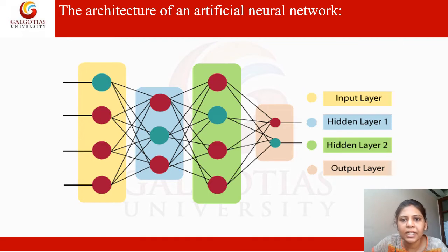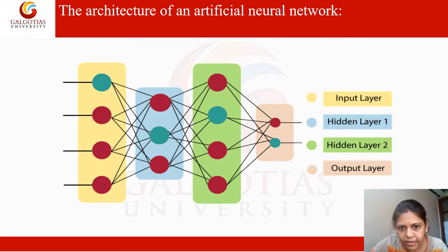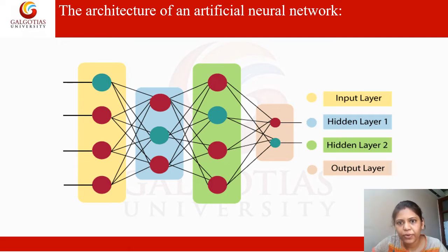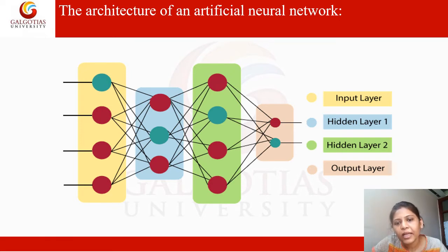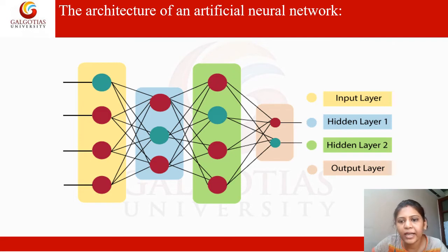This is the basic architecture of artificial neural network. First is the input layer, second and third are the hidden layers, and the last one is the output layer. In the ANN architecture we have only one input layer which receives inputs from the users. There can be more than one hidden layer — here in this diagram there are two hidden layers: hidden layer one and hidden layer two. And there is only one output layer.